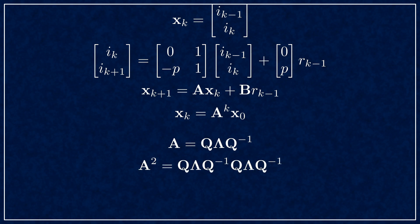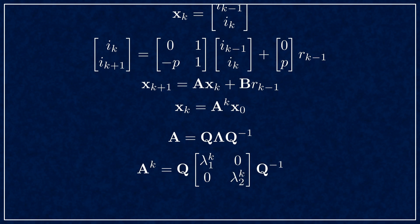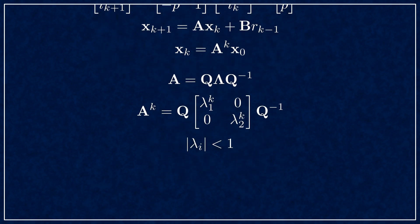Once you start raising A to higher powers, the Q's in the middle pop out, and you're left with powers of lambda in the middle. But this means the eigenvalues get raised to the kth power, so to be sure about the stability of the system, the absolute value of all the eigenvalues must be less than 1.